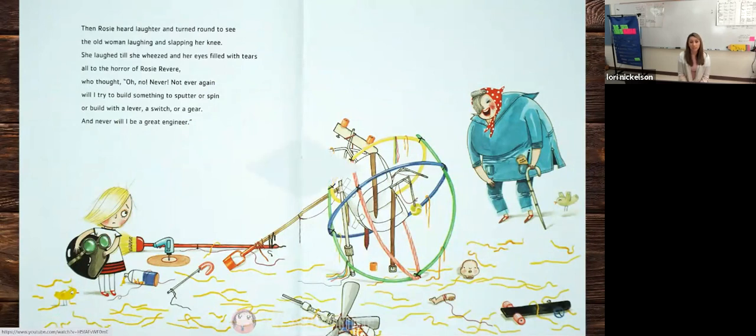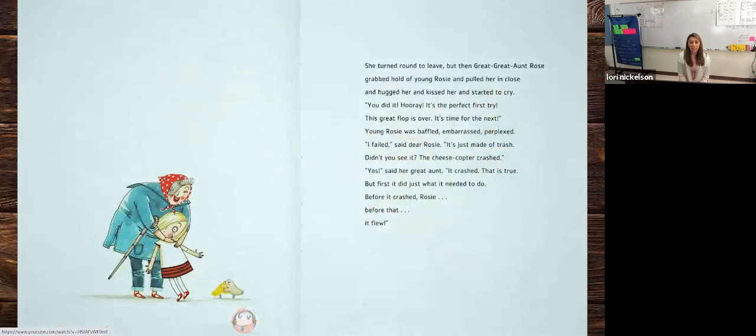She turned around to leave, but then great, great Aunt Rose grabbed a hold of young Rosie and pulled her in close. She hugged her and kissed her and started to cry. You did it. Hooray. It's perfect. First try. This great flop is over. It is time for the next. Young Rosie was baffled, embarrassed, perplexed. I failed, said dear Rosie. It's just made of trash. Didn't you see? The cheese copter crashed.